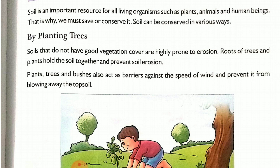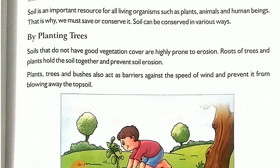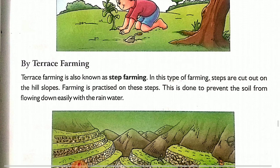Plants, trees, and bushes also act as a barrier against the speed of wind and prevent it from blowing away the topsoil. The plants, trees, or bushes reduce the wind speed — they work like a barrier against the speed of the wind — so they prevent our soil from being blown away from one place to another.